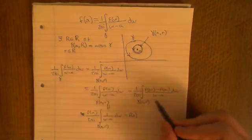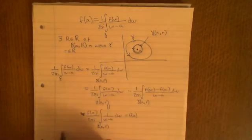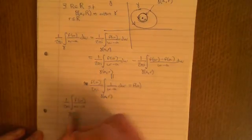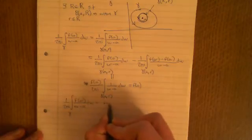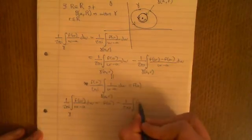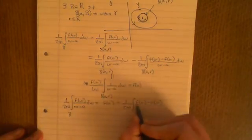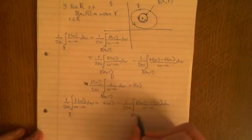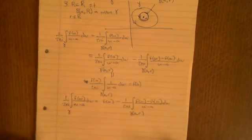So now we know that 1 over 2πi times the integral of f(w) over (w minus a) dw around gamma equals f(a) minus 1 over 2πi times the integral of (f(w) minus f(a)) over (w minus a) dw, integrated over the closed curve gamma centred at a of radius r.